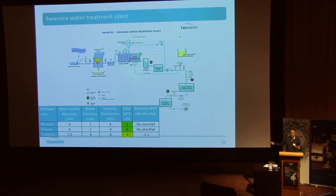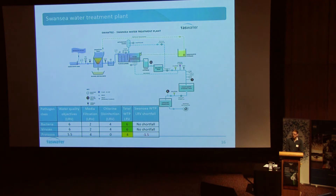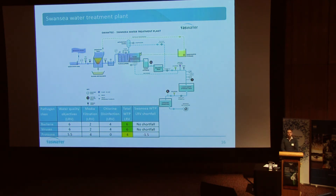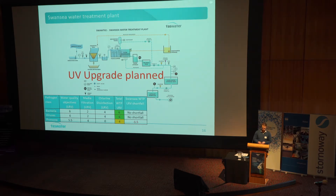So knowing we were in category four, we then looked at the Swansea water treatment plant to assess what we have that can mitigate pathogen risk. Category four means you need 6-log virus removal, 6-log bacteria removal, and 5.5-log protozoa removal. The processes at Swansea are media filtration and chlorine disinfection. We're hitting our bacteria and virus objectives, but we have a shortfall on protozoa. So we have a project now to install a UV disinfection unit at the site so that we meet our water quality objectives.